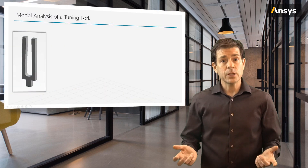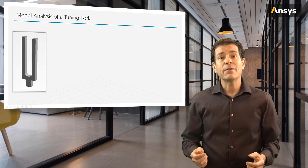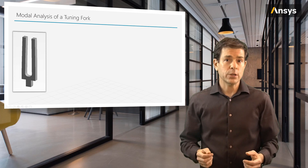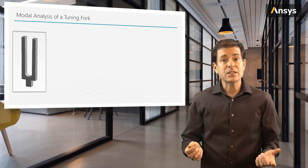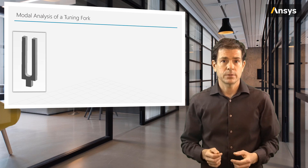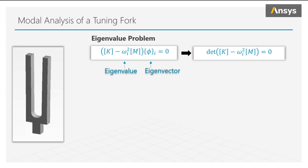We have a simulation model of a tuning fork, and it is oscillating at 440 Hz. The animation is slowed down so it can easily be seen. Now recall from our preceding lesson, we learned about the eigenvalue problem. The equation is shown here, and the solution for a general structure with many degrees of freedom requires an eigensolver.